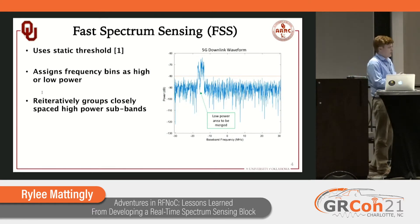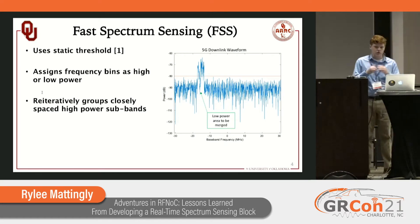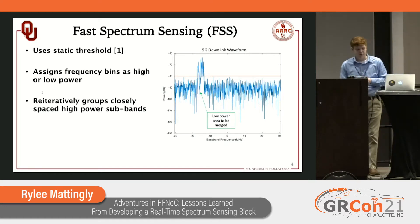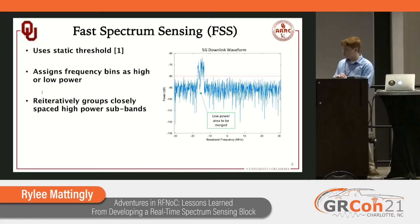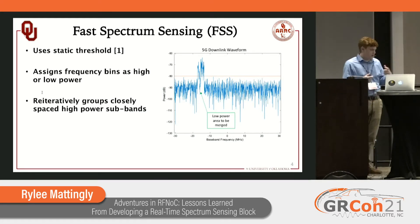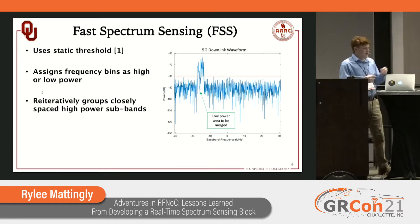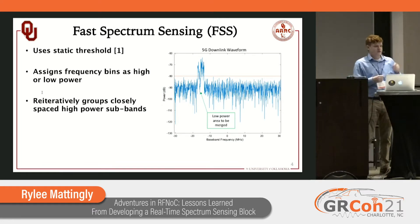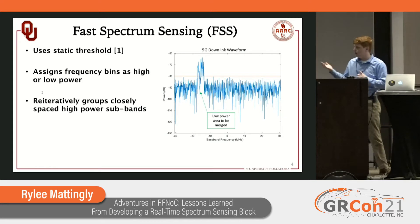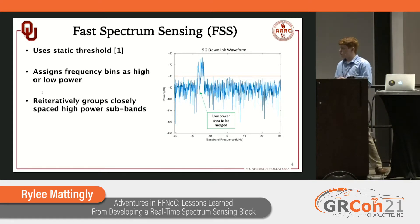What is fast spectrum sensing? In this iteration, we use a static threshold that was developed from a priori knowledge of the spectrum. We then take a frequency snapshot and assign each frequency bin as either high power or low power based on that threshold.